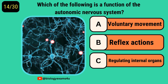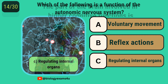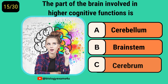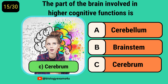Which of the following is a function of the autonomic nervous system? Regulating internal organs. The part of the brain involved in higher cognitive functions is? Cerebral.